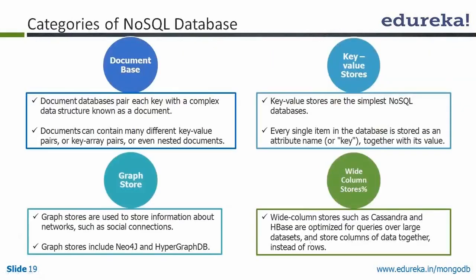Let's talk about categories of NoSQL databases. Recall that we learned there are three categories of databases: OLTP, OLAP, and NoSQL. Now NoSQL itself is classified into four subcategories: first is document-based, second is key-value, third is wide-column or columnar, and fourth is graph store. I've highlighted document-based because MongoDB falls under document-oriented databases.